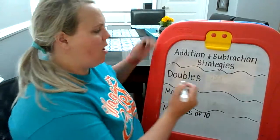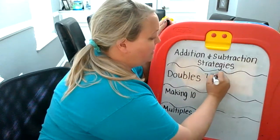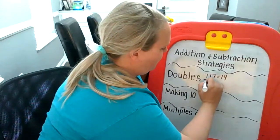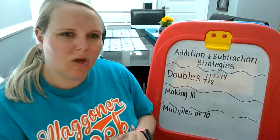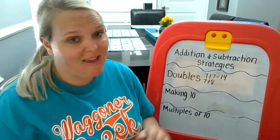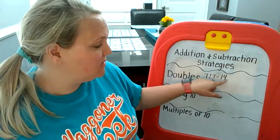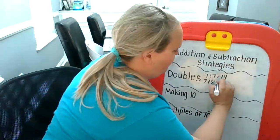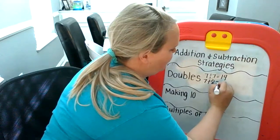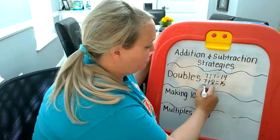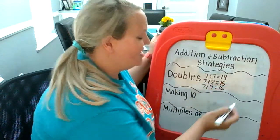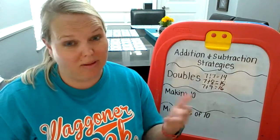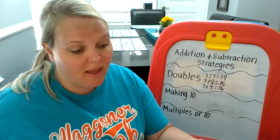Let me show you an example. I know that 7 plus 7 is equal to 14. Well, let's say that someone said, what's 7 plus 8? That's not a double, but it's a near double — it's just one more. So if 7 plus 7 is 14, and 8 is one more than one of those 7s, then I would know that 7 plus 8 is equal to 15. And then I would know that 7 plus 9 is equal to 16. Knowing my doubles will help me know the near doubles, like a double plus 1 or a double plus 2.